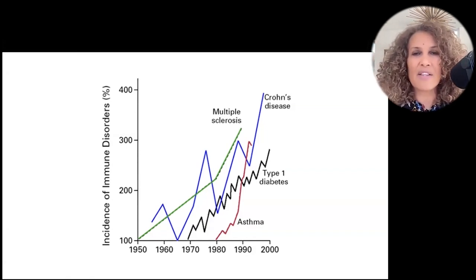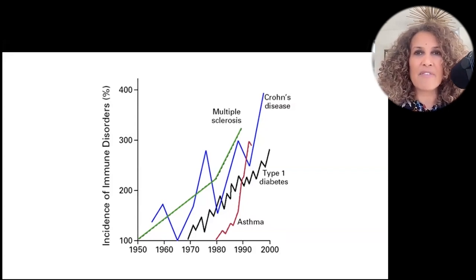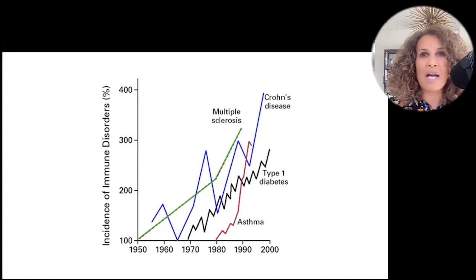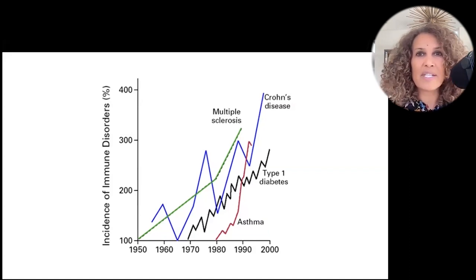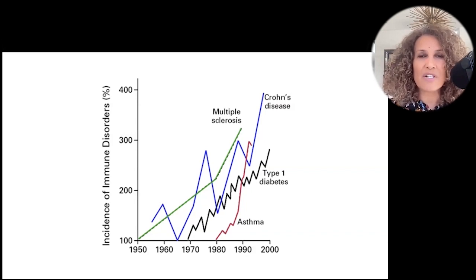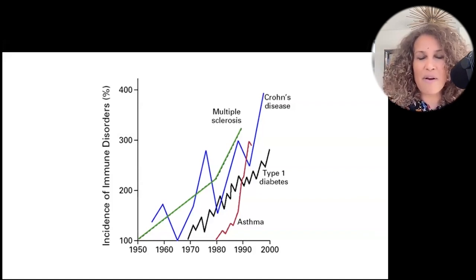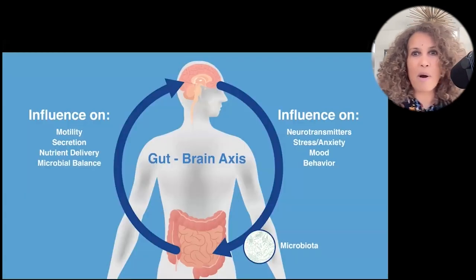One of the things leading to this increase is our super sanitized lifestyle — the fact that we're killing off our microbes. We live inside in very sterile environments, we eat highly pesticized and processed food. We take lots of medications, not just antibiotics, but acid blockers and non-steroidal anti-inflammatory drugs. We consume artificial sweeteners; antidepressants can disrupt the microbiome. So we're living in a way — with our food, our medications, our environment — that leads to dysbiosis and creates a lot of these problems.